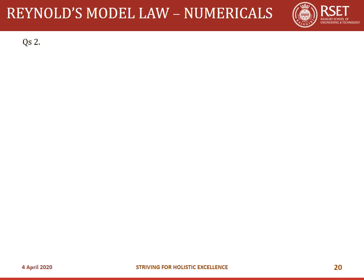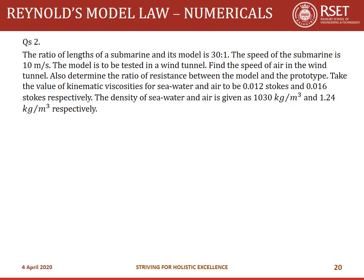Problem 2: The ratio of lengths of a submarine and its model is 30:1. The submarine speed is 10 m/s. The model is tested in a wind tunnel (fluid is air). Find the speed of air in the wind tunnel and the ratio of resistance. Kinematic viscosity of seawater νP = 0.012 stokes; air νM = 0.016 stokes. Density of seawater ρP = 1030 kg/m³; air ρM = 1.24 kg/m³; LR = 30.